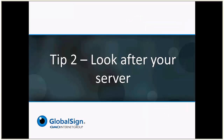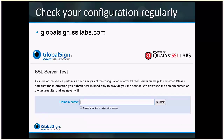Then we're going to look at tip two, which is to look after your server — and specifically to look after the configuration of your server. GlobalSign created a simple tool which is powered by Qualys SSL Labs. That tool, which you can find at GlobalSign SSL Labs, is really simple to use. You just enter the fully qualified domain name, for example www.globalsign.com. When you submit the form, it will automatically test if your server is compliant with all best practices.